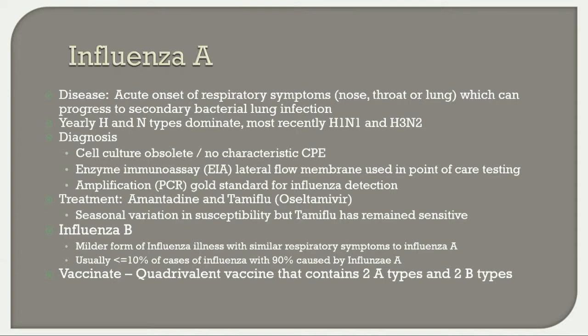Influenza B has a milder form of respiratory illness similar to influenza A, usually causing less than 10 percent of total influenza cases per year — typically around 10 percent B and 90 percent influenza A. Last year in the US was unusual with up to 30 percent influenza B cases due to a poorly matched vaccine. The best approach is always to vaccinate; a quadrivalent vaccine contains 2 influenza A and 2 influenza B types.